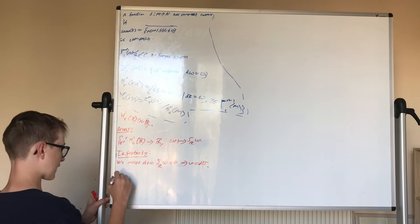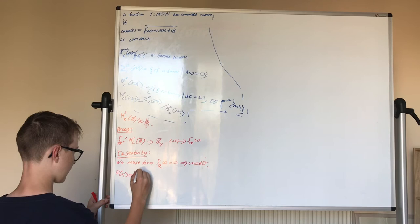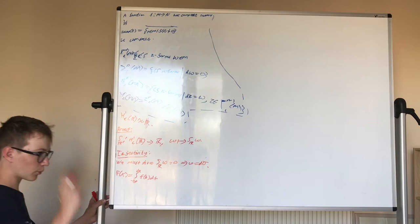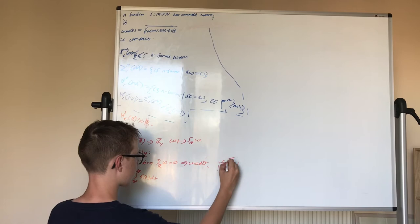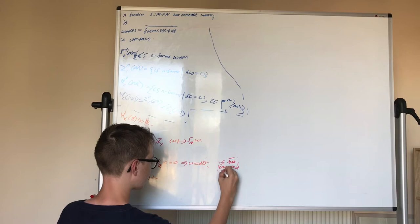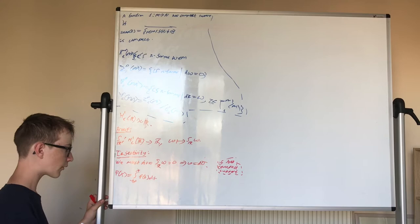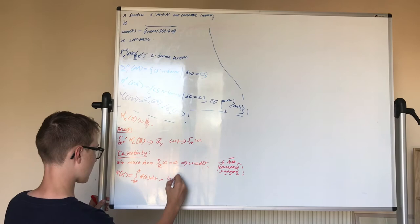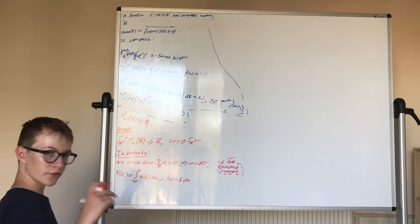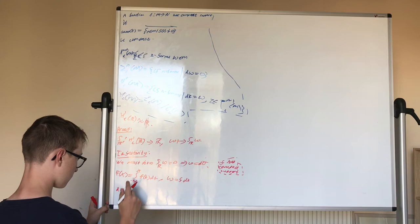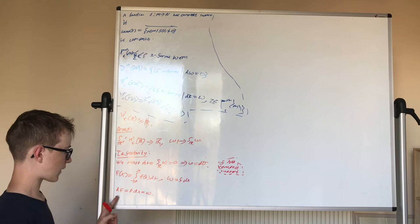Well, we have to consider F, capital F of X, equal to the integral between negative infinity and X of F of T dt. Now, the important part is that, because F has compact support, little f. Now, we're going to use Heine-Borel theorem to show that F has compact support. Now, we're going to pick omega equal to F dx. First, we have to show that this actually is true. So if omega equals F dx, then DF equals F dx, which equals omega. Now, we just have to show that DF has compact support.